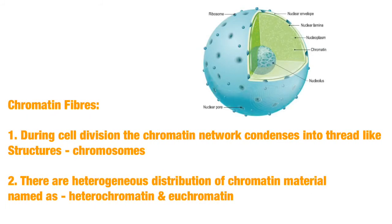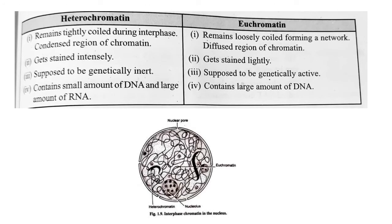Chromosomes are visible during cell division only — the chromatin network condenses into thread- or rod-like structures called chromosomes. There is heterogeneous distribution of chromatin material, so it can be named as heterochromatin or euchromatin. Heterochromatin remains tightly coiled during interphase and contains a small amount of DNA and a large amount of RNA, while euchromatin remains loosely coiled and contains a large amount of DNA.